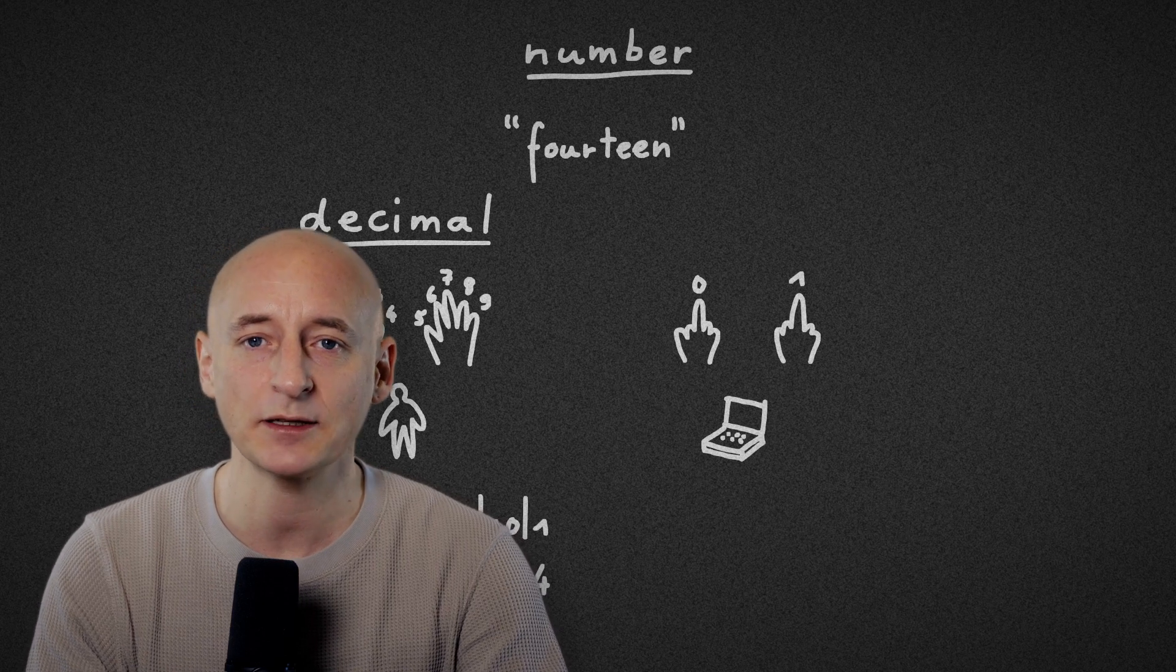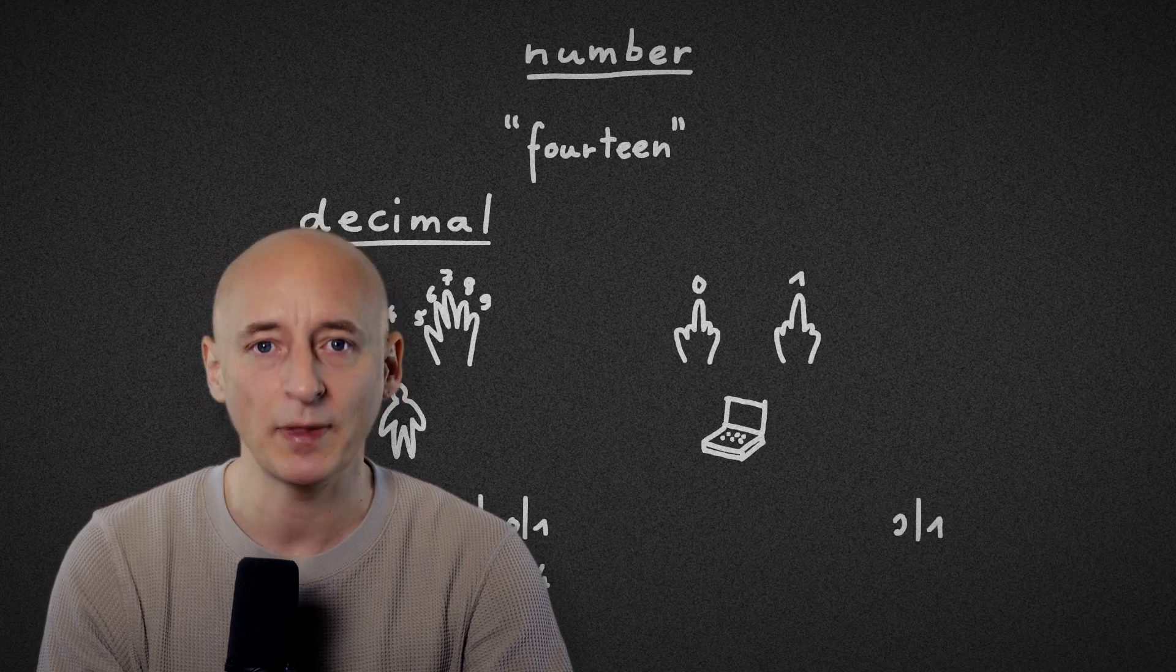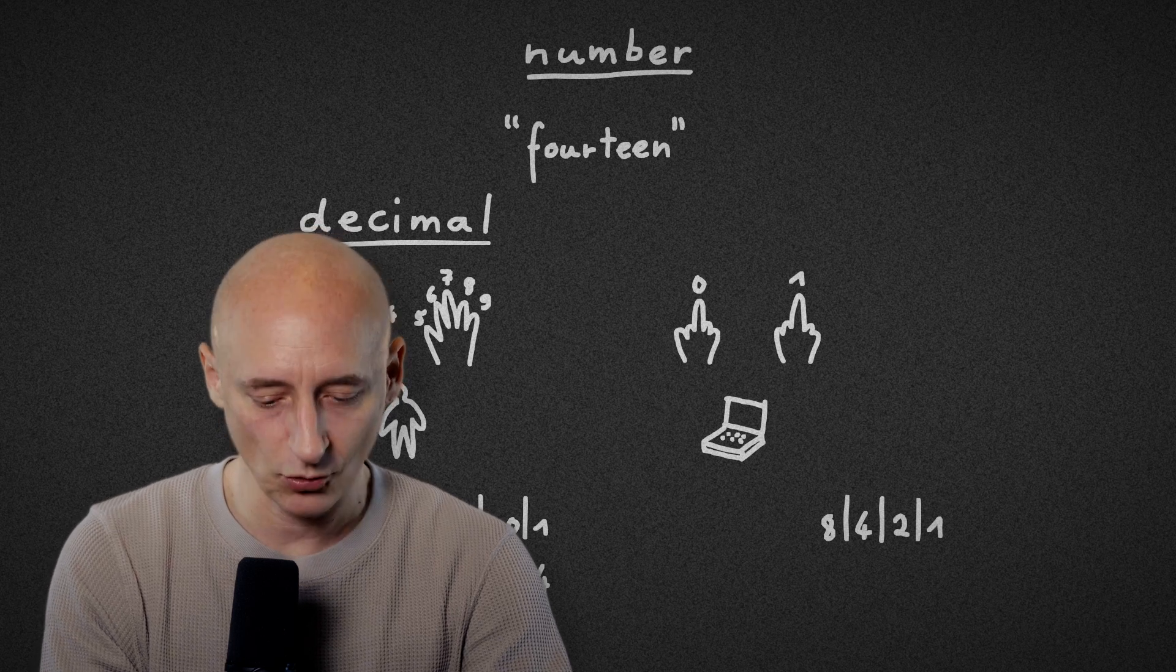each position represents a potency of two. We start with one. The next position is two, then two times two, then two times two times two, and so on.